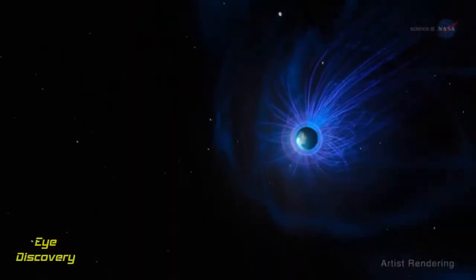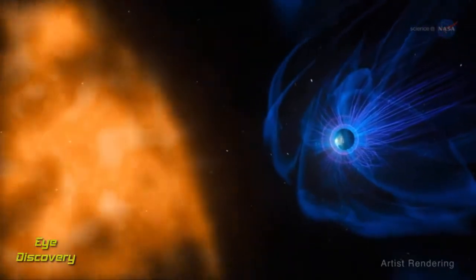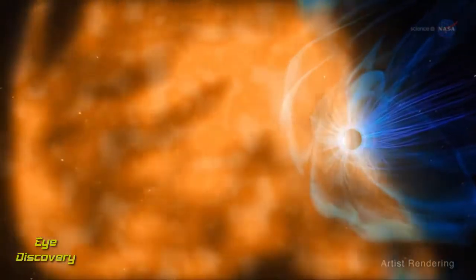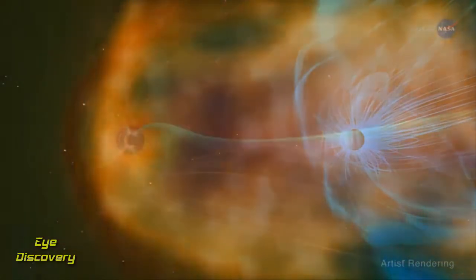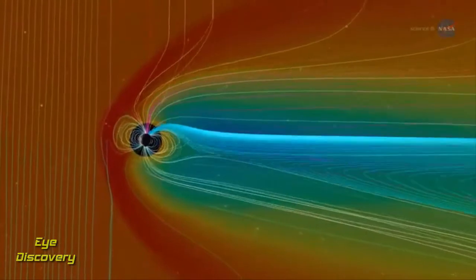As the wind flows toward Earth, it carries with it the sun's magnetic field. It moves very fast, then smacks right into Earth's magnetic field. The blow causes a shock to our magnetic protection, which can result in turbulence.